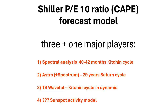Also available is a PDF file — an online document with step-by-step explanation of how I got this forecast, so everybody can repeat all my steps using Timing Solution software. I see actually three plus one major players here. Firstly, spectral analysis — the periodogram reveals that a 40–42 month cycle, the Kitchen inventory cycle, is definitely present in CAPE.